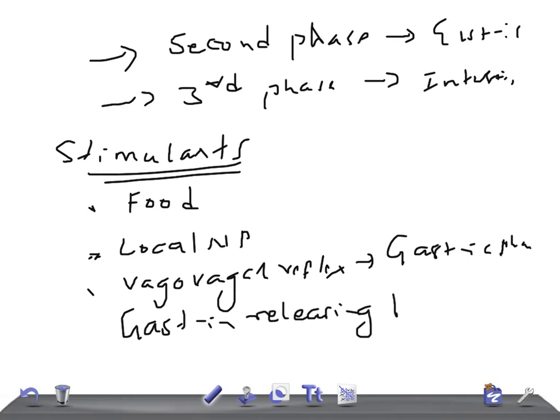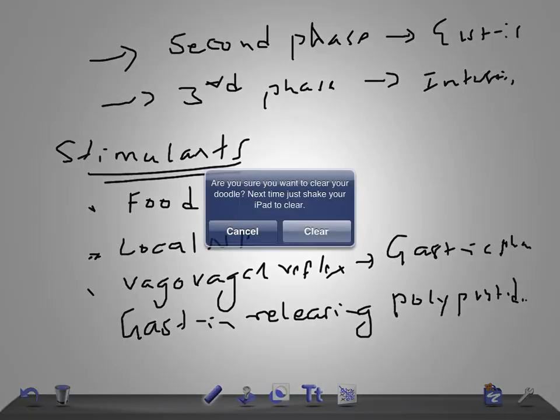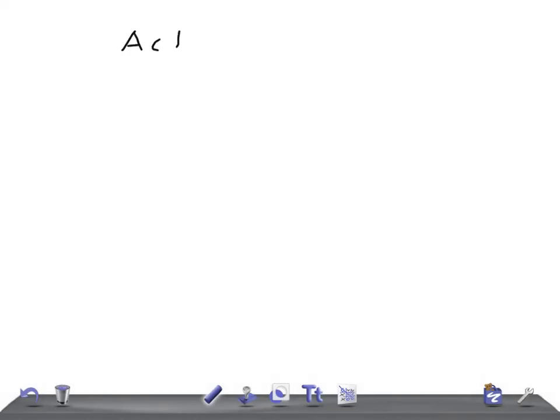The gastrin-releasing polypeptide is released at the vagal nerve endings and it causes the secretion of gastrin by stimulating the G-cells or TG-cells. Now let's talk about the actions and functions of gastrin.